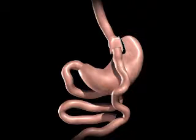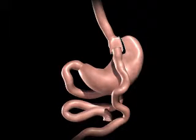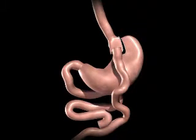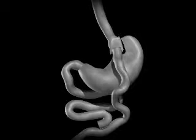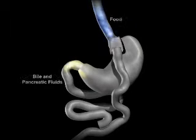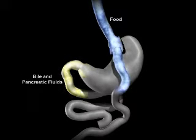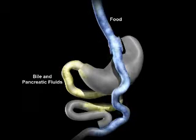Bypassing a portion of the small intestine decreases the absorption of calories and nutrients. The upper portion of the small intestine is reconnected to the lower portion of the intestine. The bile and pancreatic fluids from the liver and pancreas allow food to be completely digested.